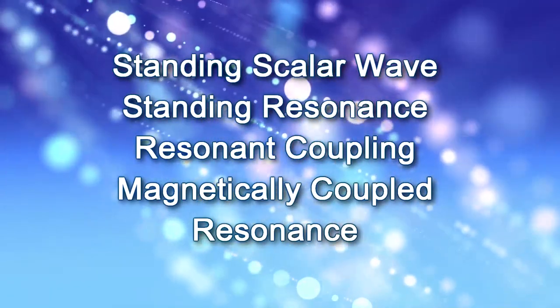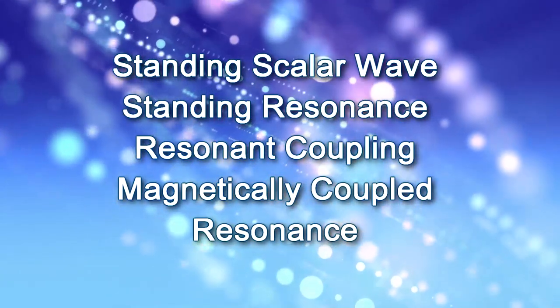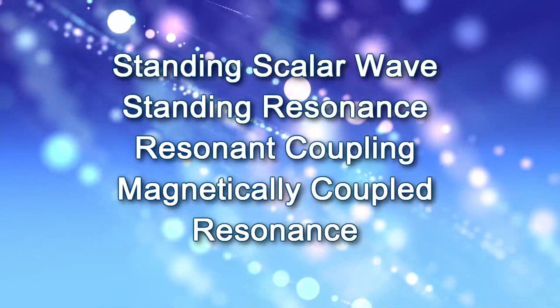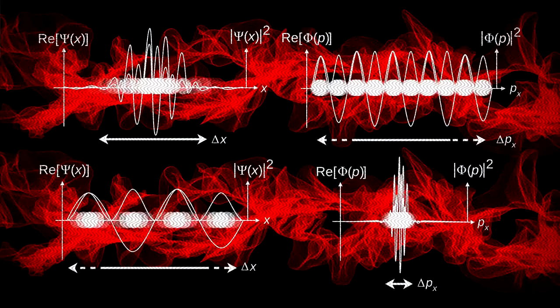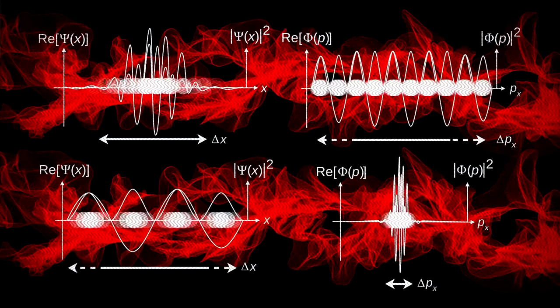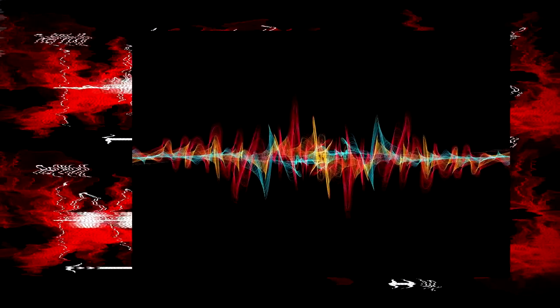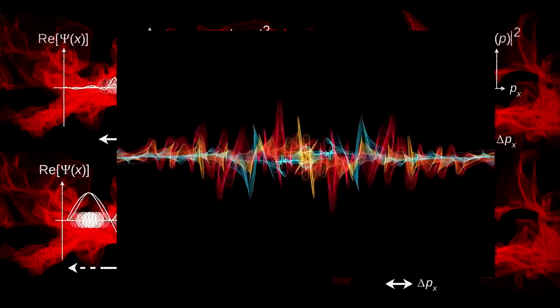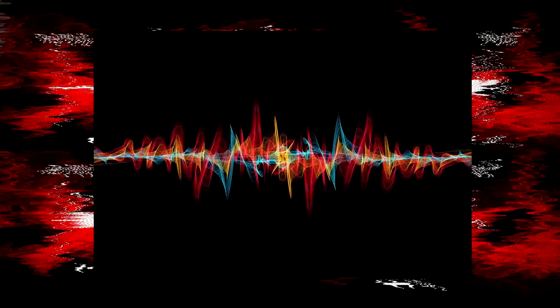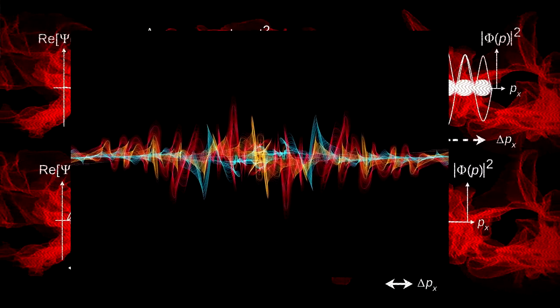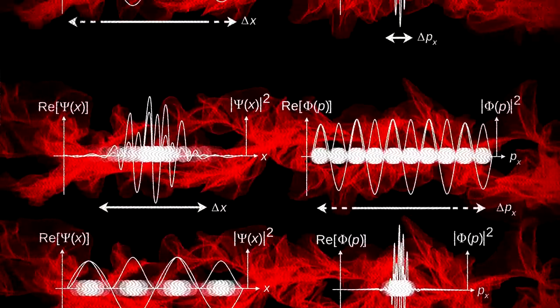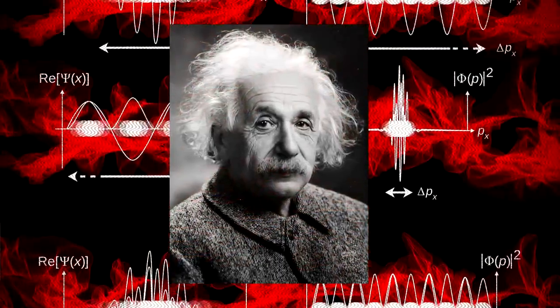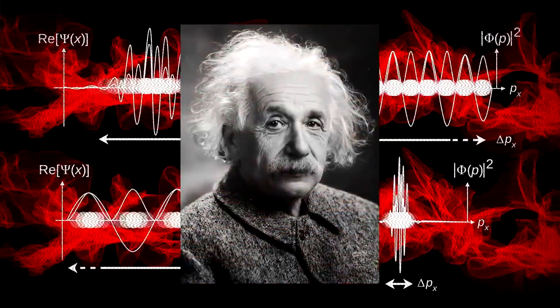Terms such as standing scalar wave or standing resonance or resonant coupling or magnetically coupled resonance relate to the same physical phenomenon. It might have to do with something known in physics as quantum entanglement. Change in state of one particle may cause change in state of a particle positioned even light years away. It happens only when particles are observed. This is instant reaction and Albert Einstein had a problem with it. He called it a spooky action at a distance.